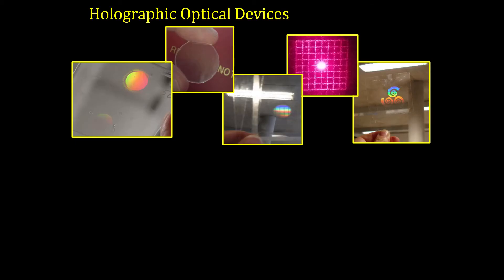So what kind of devices can we actually make? We've made things from simple gratings to diffusers, lenses, and then on to something more complex like these diffractive patterns or individualized holograms, and this has applications across a large range of areas.